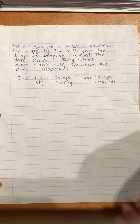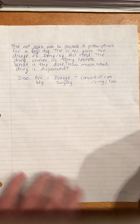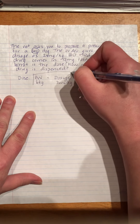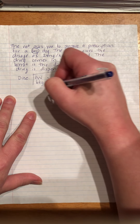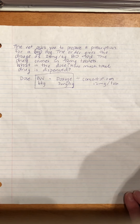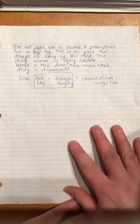Let's refresh our memory about our formulas. Dose is going to be the body weight times the dosage divided by the concentration. In this example, our body weight is six kilograms, our dosage is two milligrams per kilogram, and our concentration is 12 milligrams per tablet.